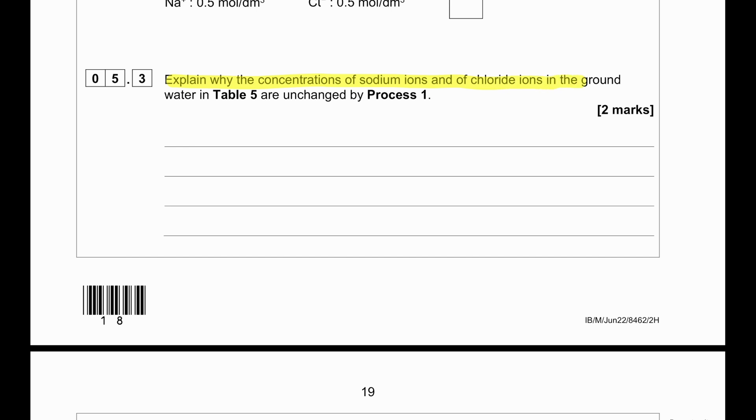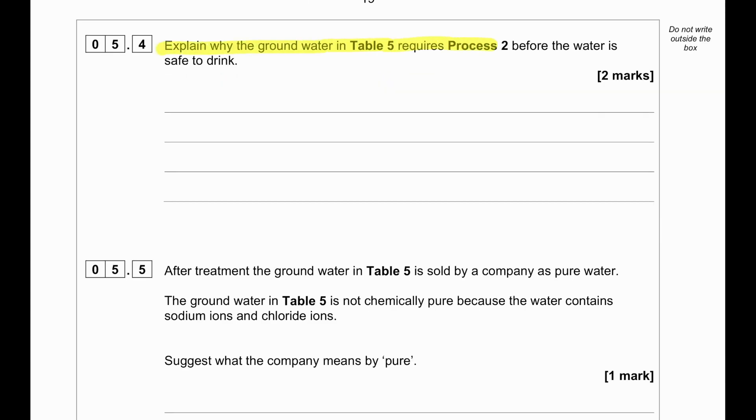Explain why the concentration of sodium and chloride ions in the groundwater in Table 5 are unchanged by the process. In the filtration process, the ions can simply pass through the filter. The ions are in solution, so they are not screened by the filter.